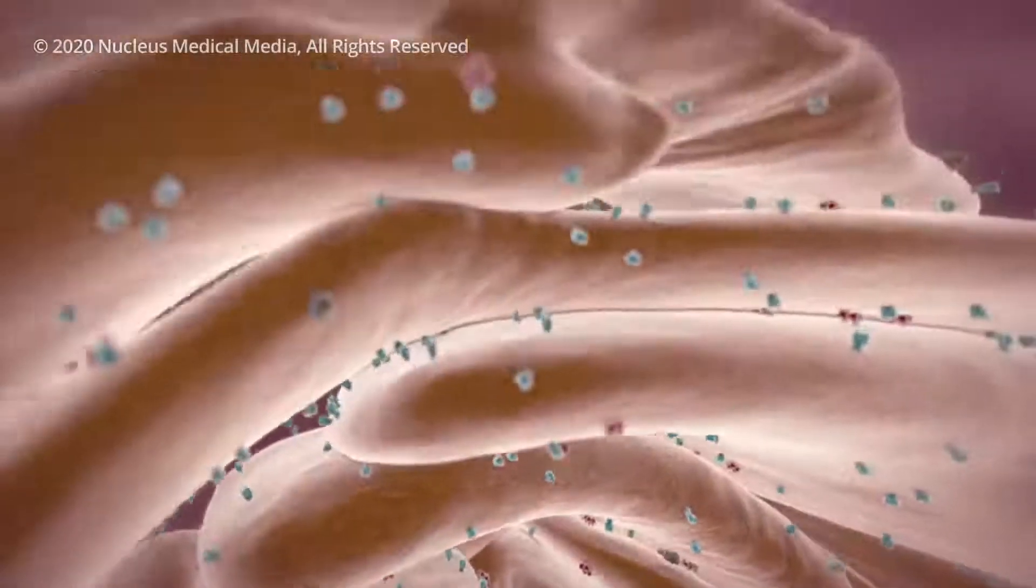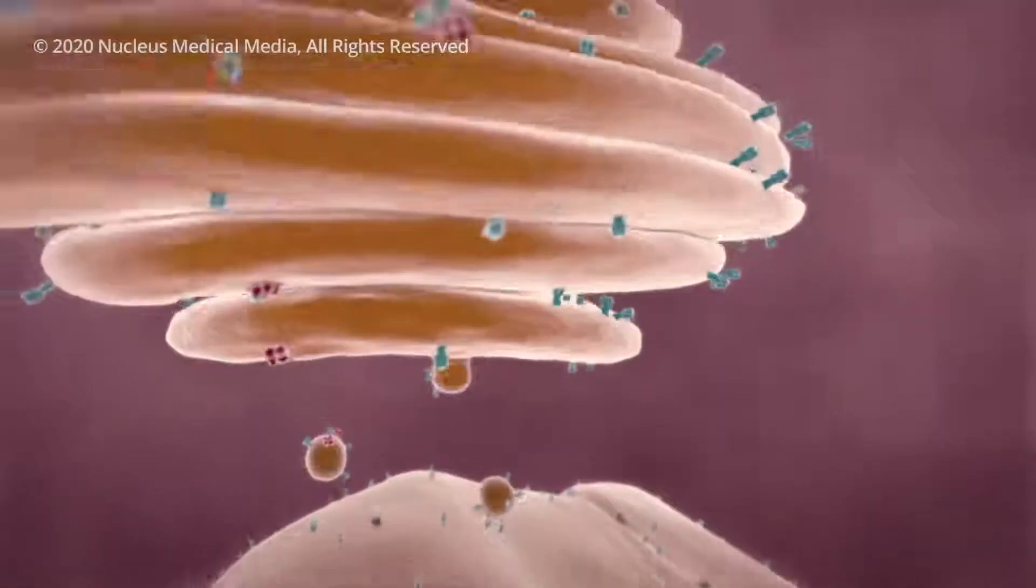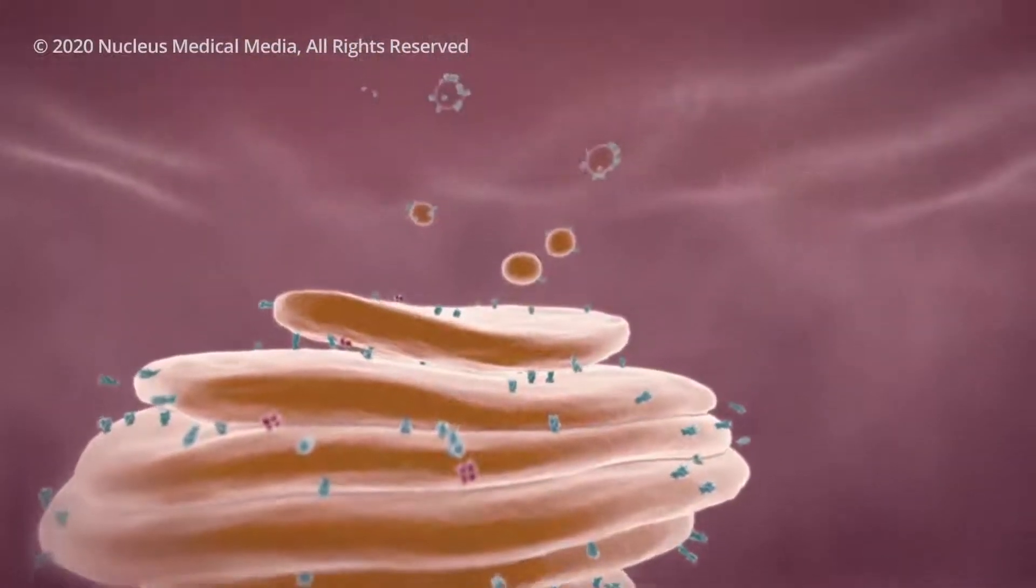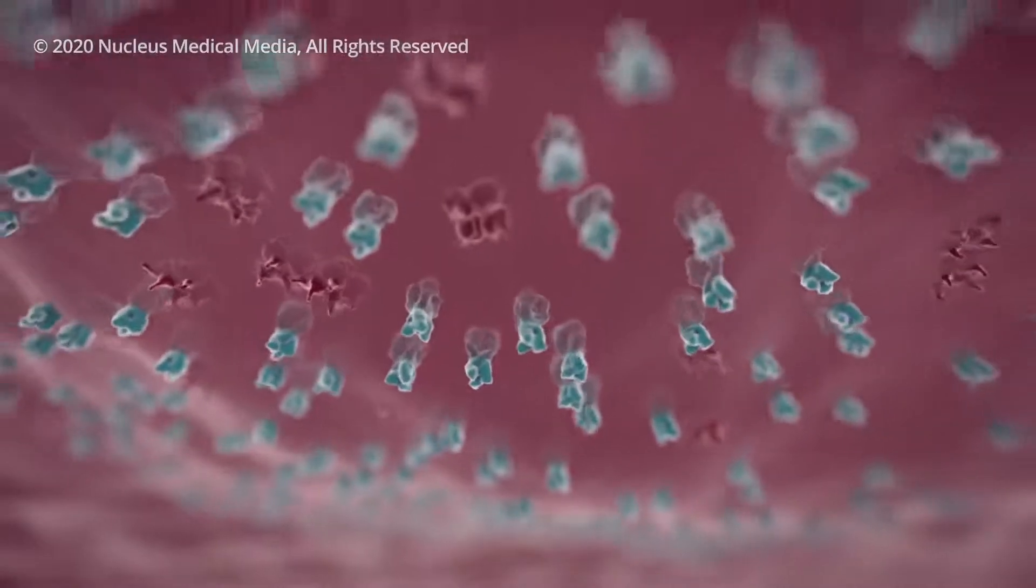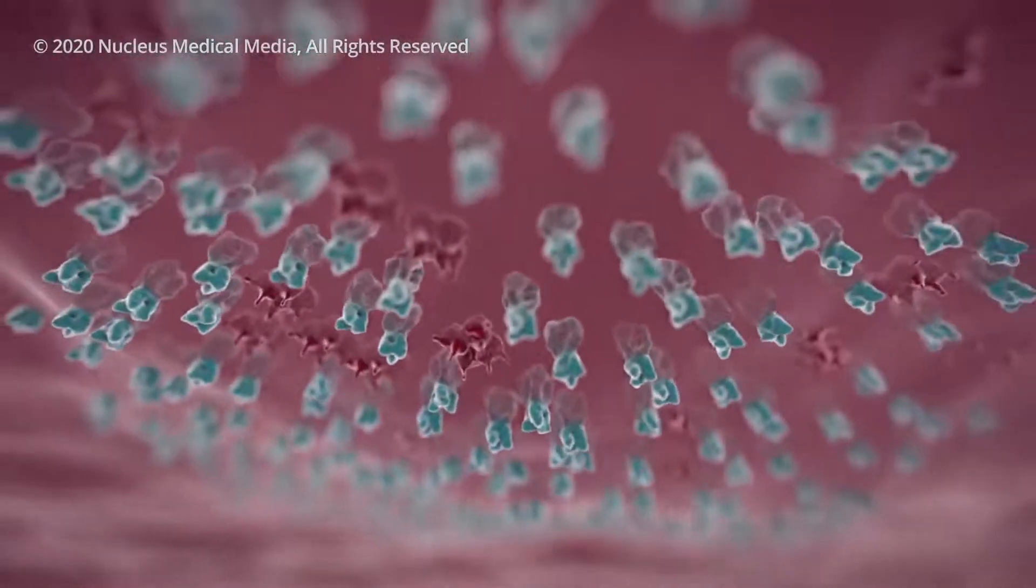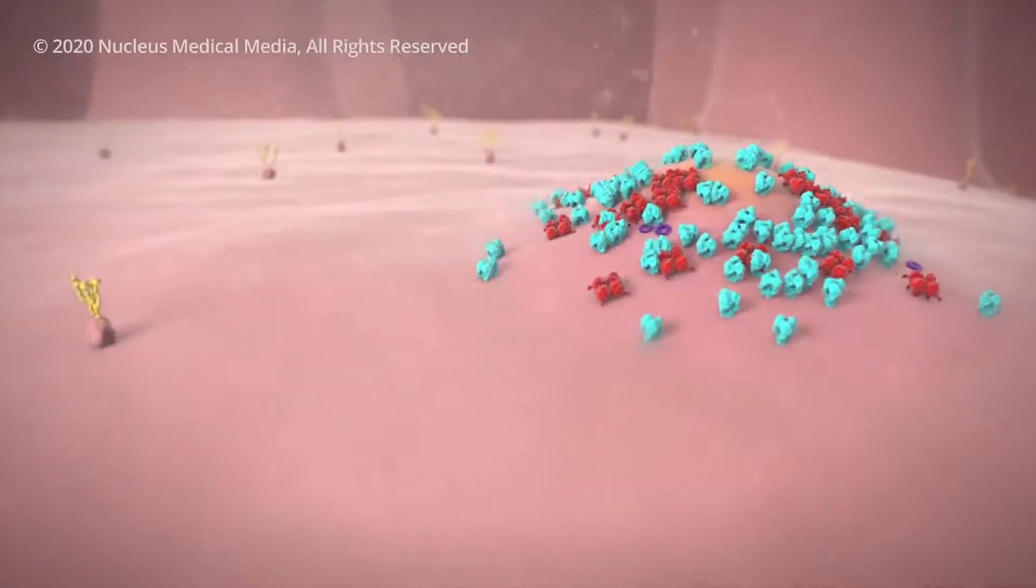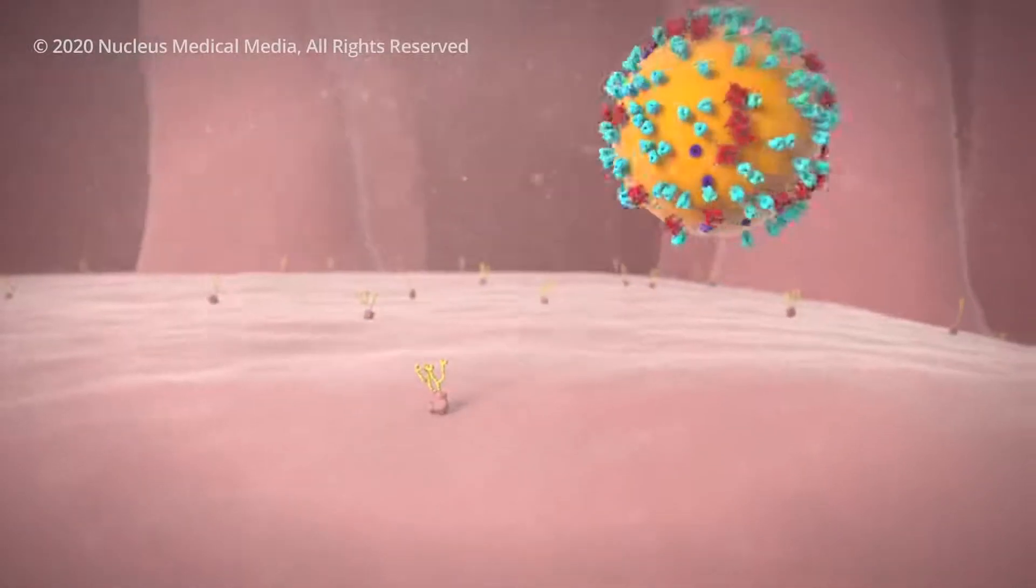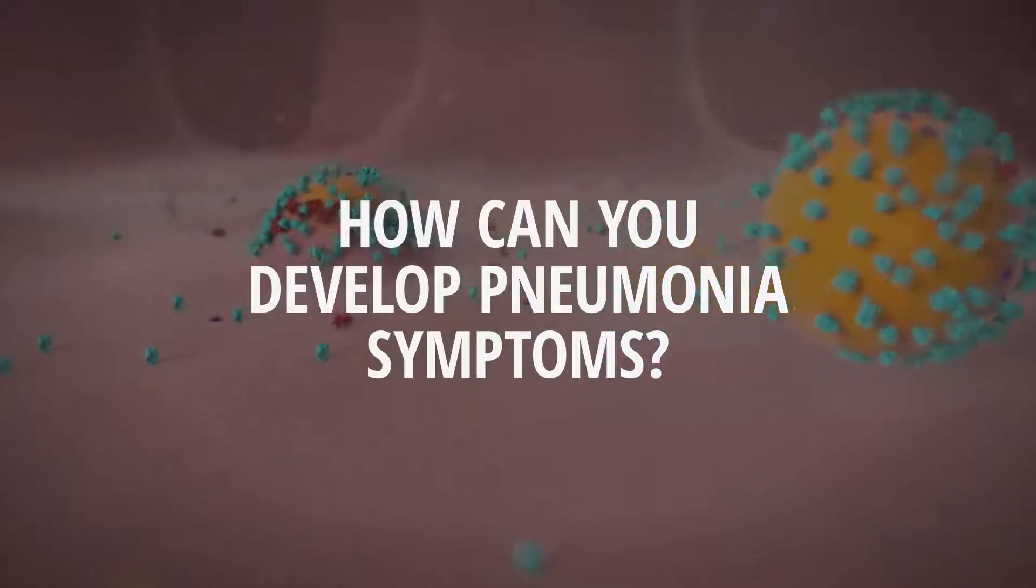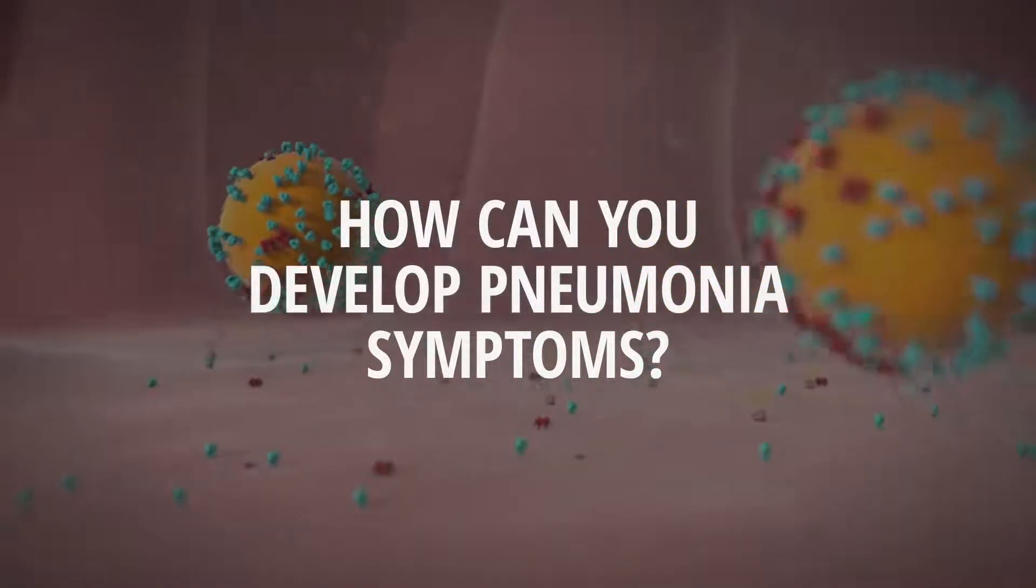A packaging structure in your cell then carries the spikes in vesicles, which merge with your cell's outer layer, the cell membrane. All the parts needed to create a new virus gather just beneath your cell's membrane. Then, a new virus begins to bud off from the cell's membrane. Now, with the virus spreading in your body, how can you develop pneumonia symptoms?